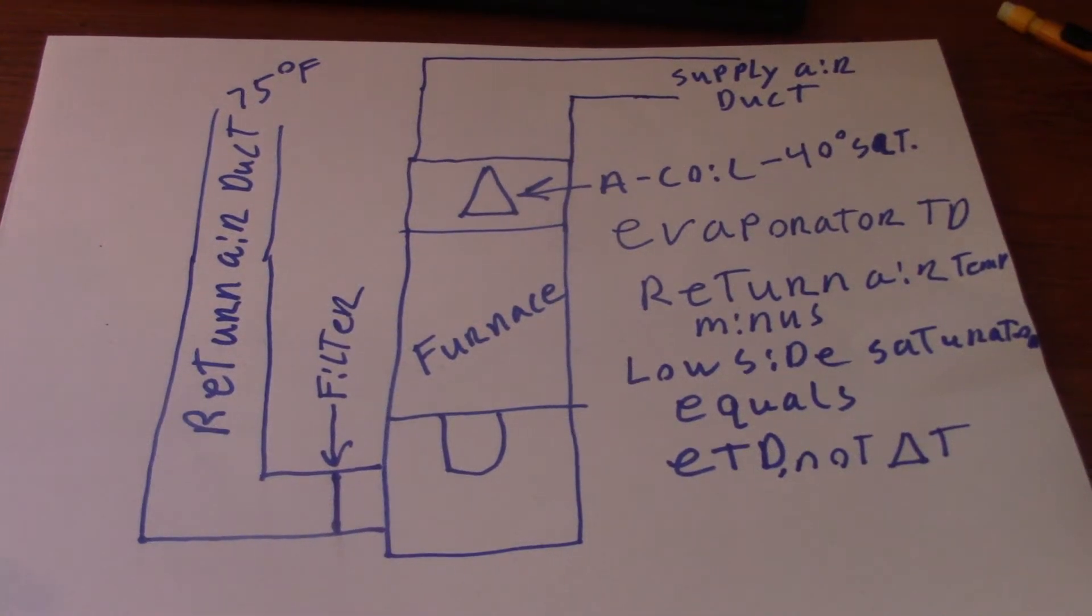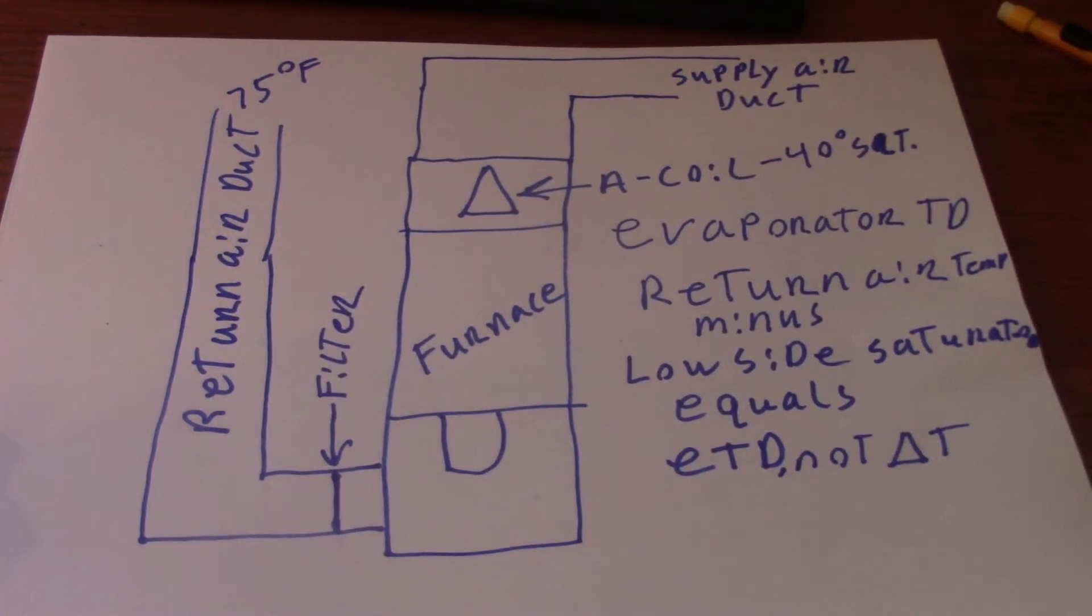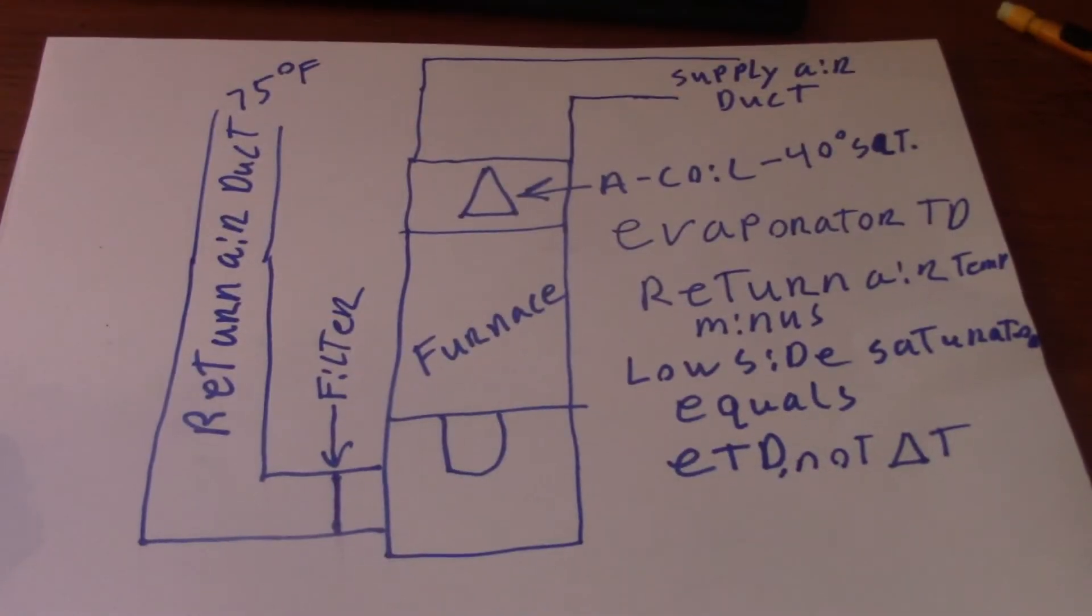Today we're going to talk about evaporator TD on an air conditioner. Now a lot of people say to calculate evaporator TD it's return air minus supply air. Wrong. No. That would be Delta T, which I have another video on that you can watch.